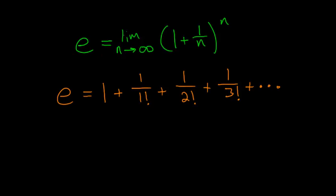In the last video, I showed you that e was defined as the limit as n approaches infinity of 1 plus 1 over n to the n-th power. In this video, I'm going to show you how we can derive this second equation for e involving factorials. The reason we want to do this is that this second equation converges much, much faster. The way to do this is to start with this expression and expand it using the binomial theorem, and then take the limit as n approaches infinity.